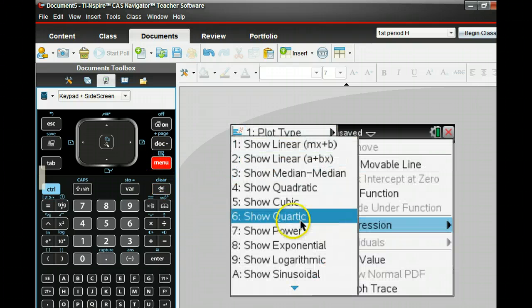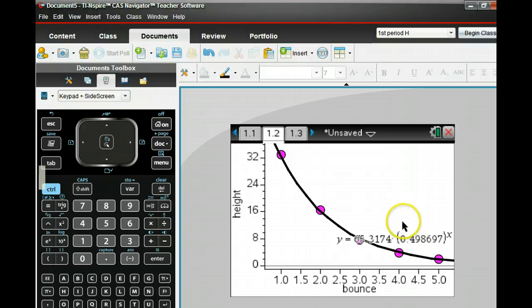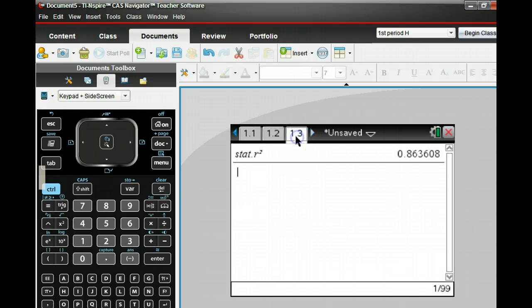I'm going to redo regression, menu, analyze, regression. And I'm going to try exponential. And so it gives me an equation there. It seems to go right through that data pretty well. It seems to be a good fit.